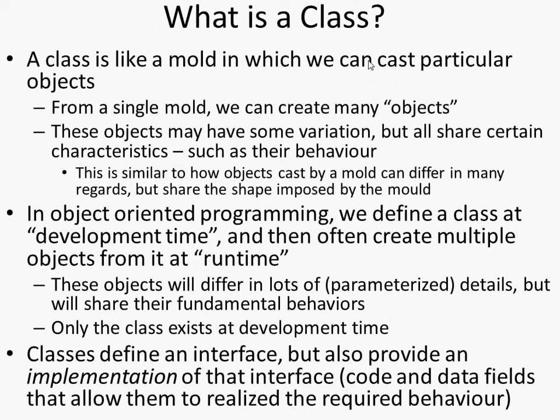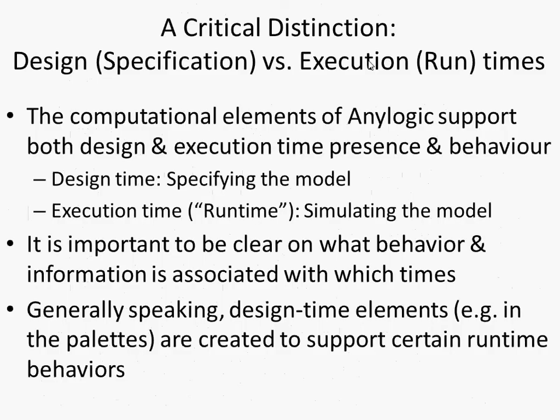This is lingo drawn from object-oriented programming. Using this lingo, we define the class at development time, but we get many objects from it at what's called run time. When the model is actually executing, we have many instances — many particular copies of persons who have this characteristic of personhood. Classes provide an implementation of this interface, allowing them to run at runtime. It's important to be clear on the distinction between what we specify at design time and what is set when it's actually running — similar to the distinction between the recipe itself and actually putting the recipe into practice.